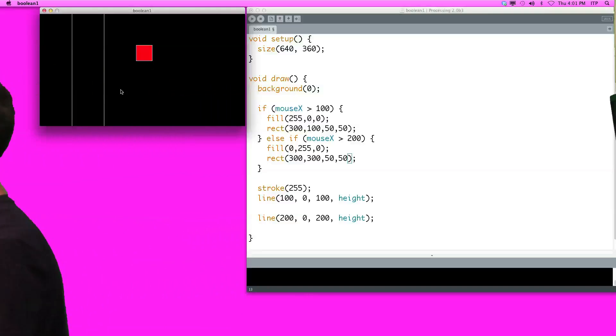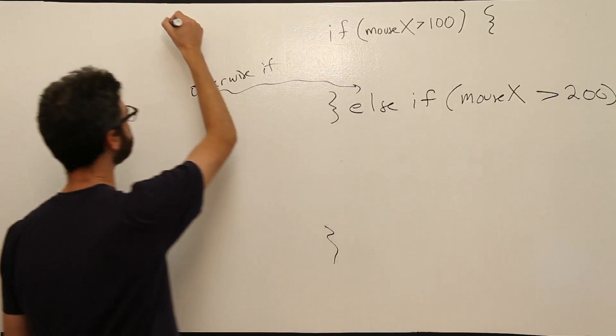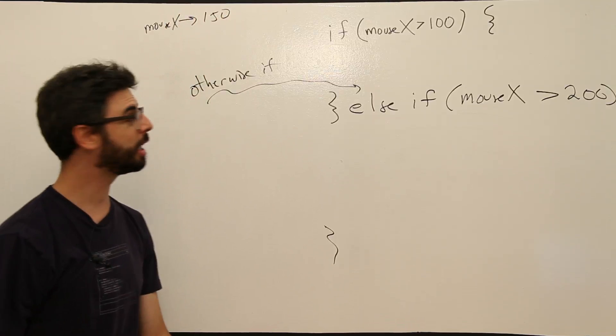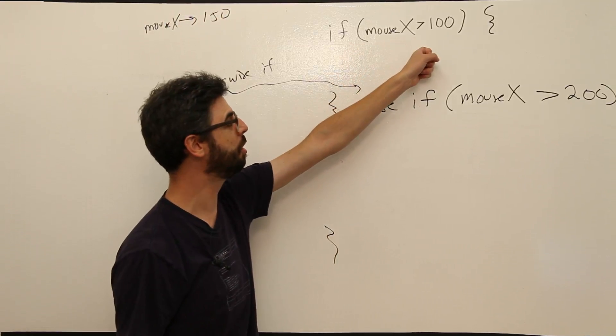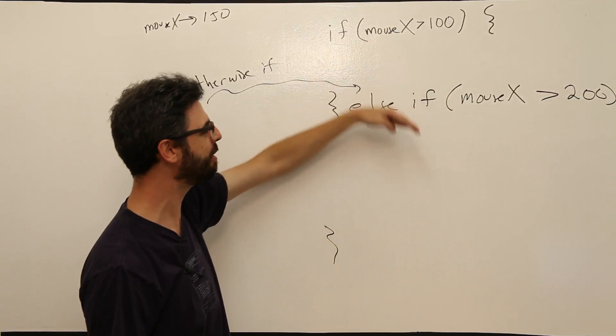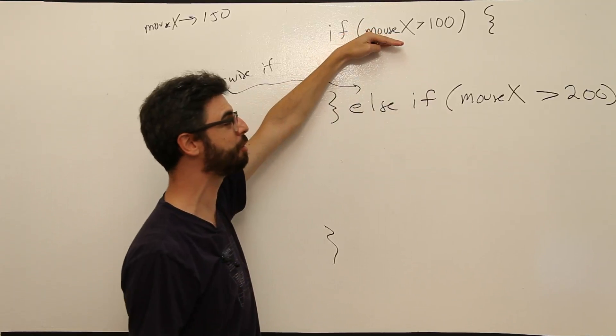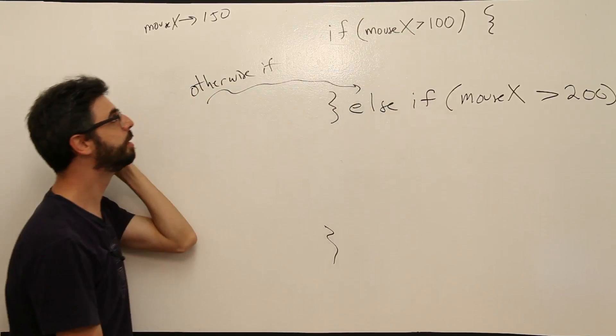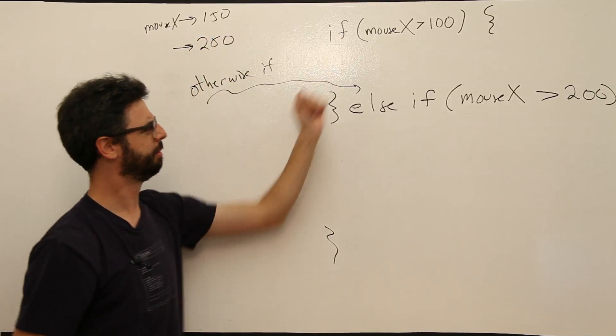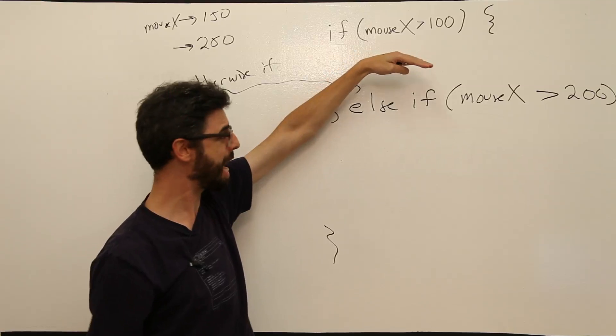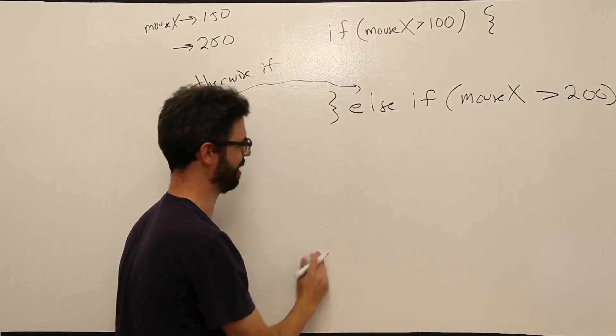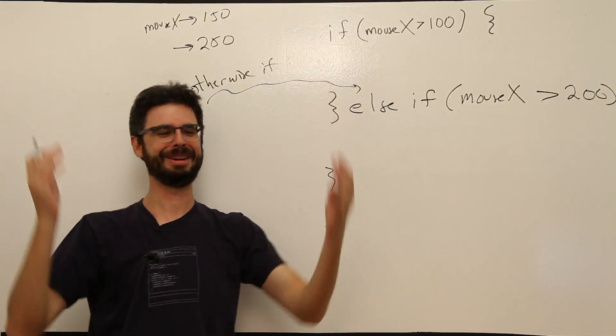Alright, well, let's think about it. Let's say for the moment, what happens if mouse x is 150? If mouse x is 150, this is true. So we execute this code. We don't execute this code. With an else if, the first thing we find to be true, we leave. If mouse x is 250, let's say 250 is greater than 100, execute this code. We leave. We're done.